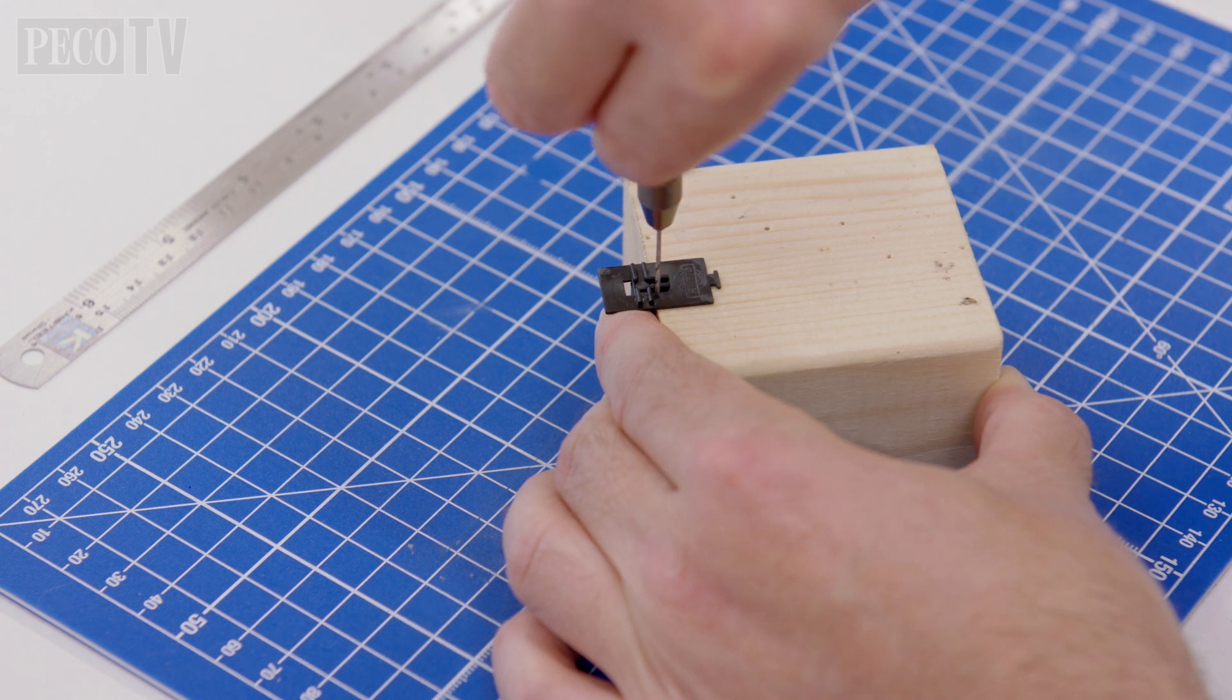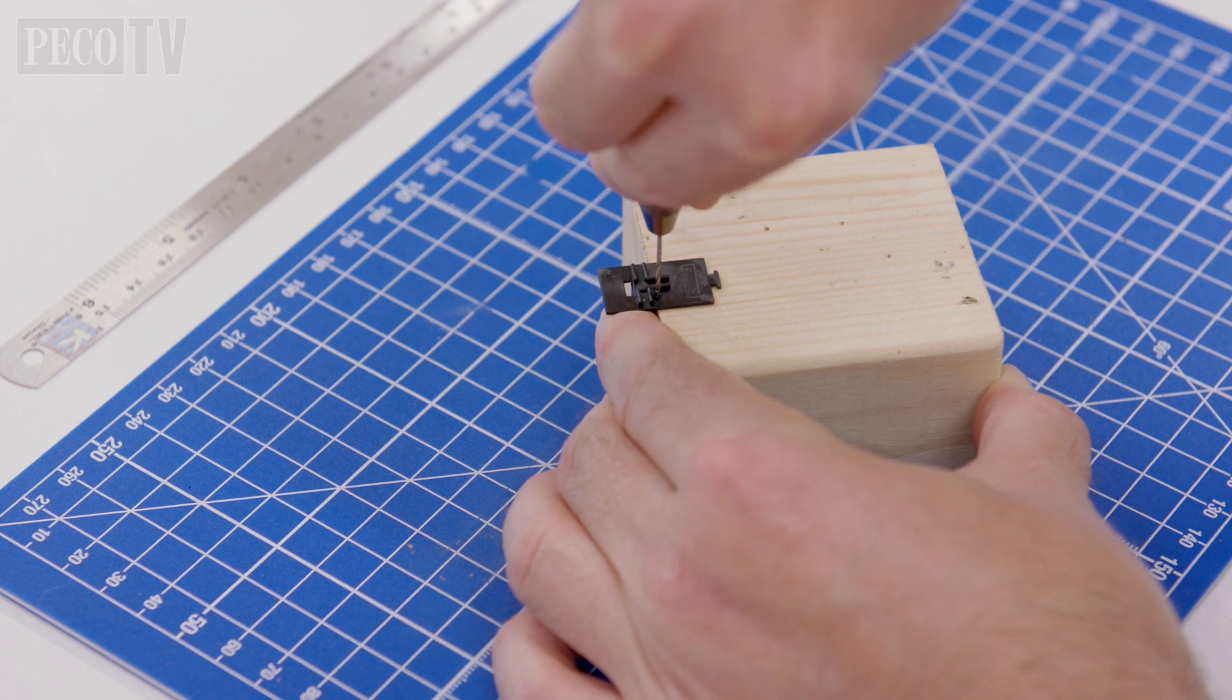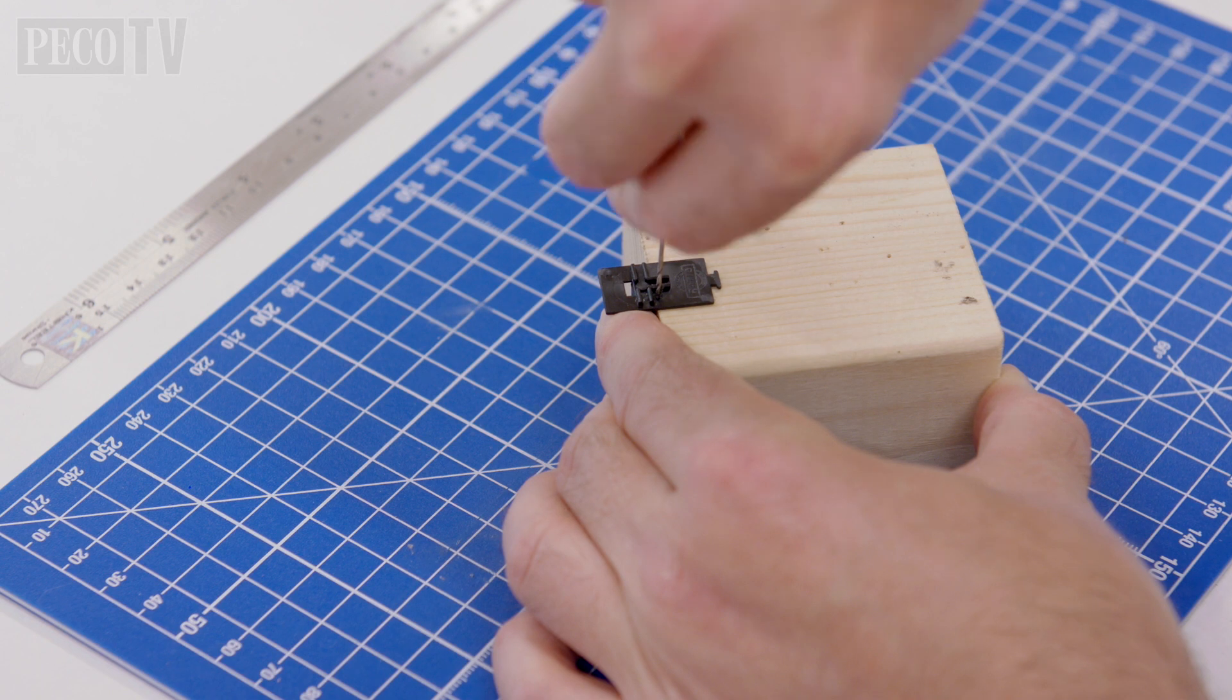Taking the same pin vise, drill a hole in the corner of the reverse side of the signal base. This is to disguise the wires which later on for the LED will be glued to the back of your signal post and can drop down through the hole and the baseboard.